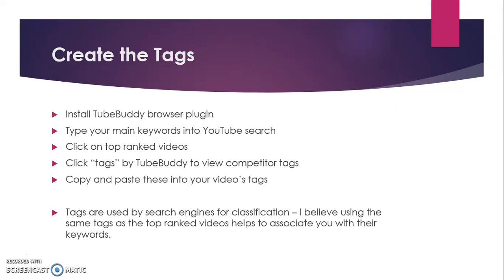Now I'll discuss creating tags. You should install the TubeBuddy browser plugin in Google Chrome. Then type your main keywords in YouTube search, click on top-ranked videos, and click on Tags by TubeBuddy to view competitors' tags. Copy and paste these tags into your video file uploaded on YouTube. Tags are used by the search engine for classification. Using the same tags as top-ranked videos helps associate you with their keywords — this is a comparator strategy that helps in all your digital marketing activities.